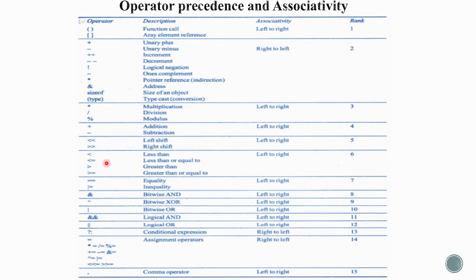This is the complete list of operators and their precedence. Function calls, square brackets for array elements — all are rank 1, with left-to-right associativity. Then at the second rank we have unary plus, unary minus, increment (plus plus), decrement (minus minus), logical negation, bitwise complement, dereference (star), address operator, sizeof, and type casting. This is the second priority and has right-to-left associativity.